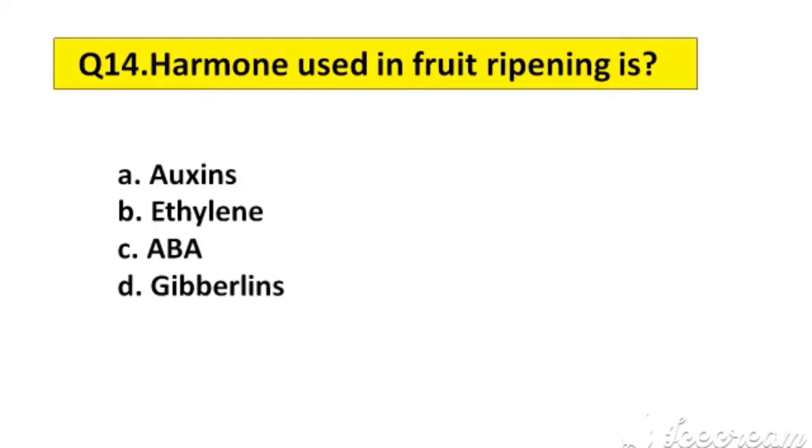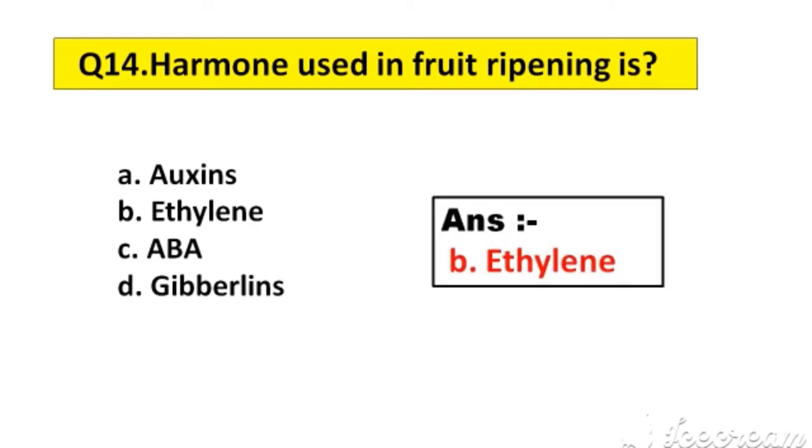Question number 14. Hormone used in fruit ripening is: A. Auxins, B. Ethylene, C. ABA, D. Gibberellins. The right answer is option B, Ethylene.